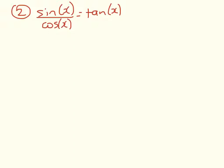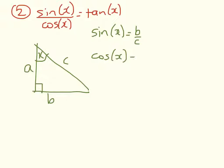On to the next proof. So we want to prove that sine of x divided by cosine of x is equal to tan x. So I'm going to start with another triangle. We've got angle x up here. Label our three sides a, b, and c. So sine of x is equal to b over c. Cosine of x is equal to a over c. tan of x is equal to b over a. So there are our definitions.